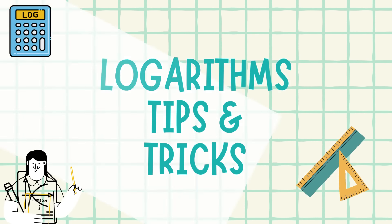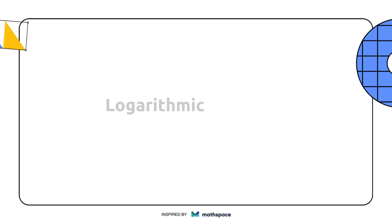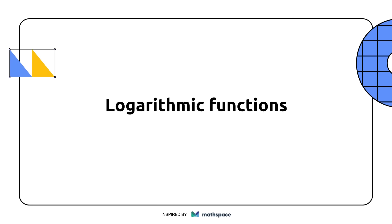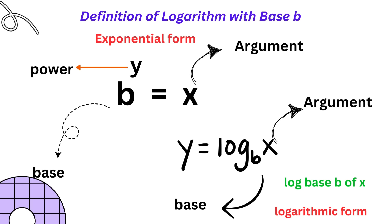Logarithm tips and tricks. Definition of logarithm with base b: consider the exponential form b to the power y equals x, where b is the base, y is the power, and x is the argument. The logarithm form for this is given by y equals log base b of x.